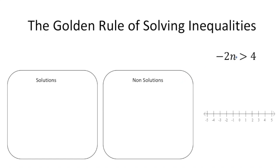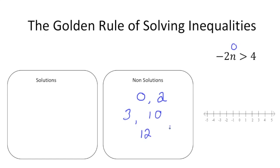Let's say, for example, if we have the number 0. Well, negative 2 times 0 is 0, and 0 is not greater than 4, so 0 is going to be a non-solution. How about the number 2? If I plug in 2, negative 2 times 2 is negative 4, and negative 4 is not greater than 4, so that's a non-solution. In fact, any number greater than 2 is not going to work either — 3, 10, 12 won't work. If I plug in 100, negative 2 times 100 is negative 200, and that's definitely not greater than 4.